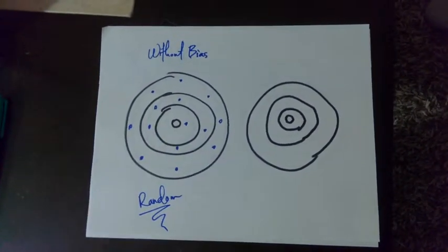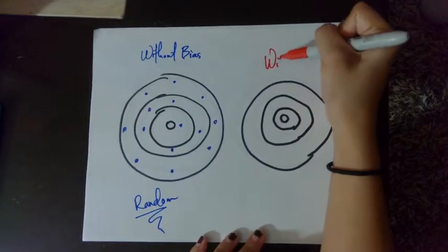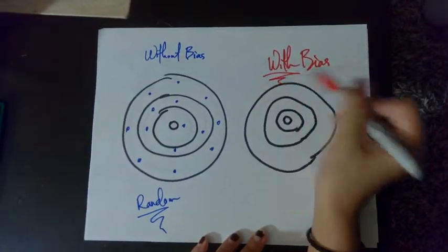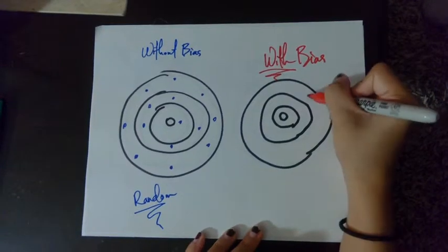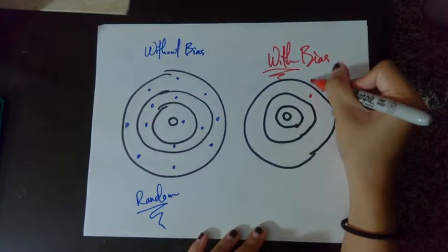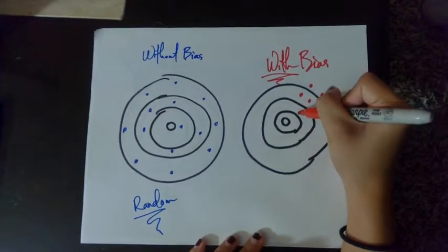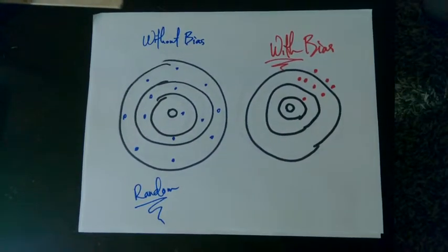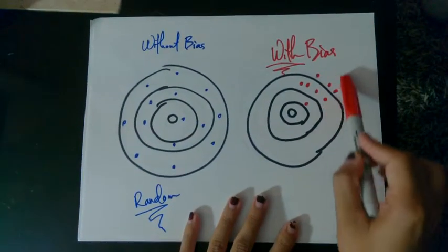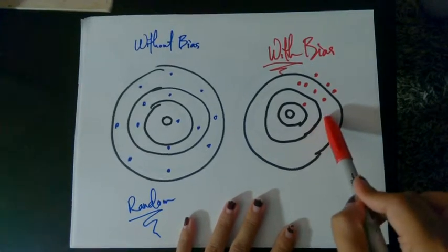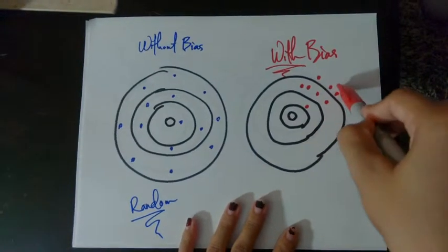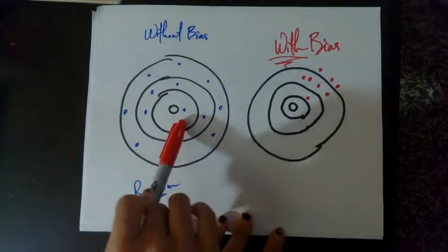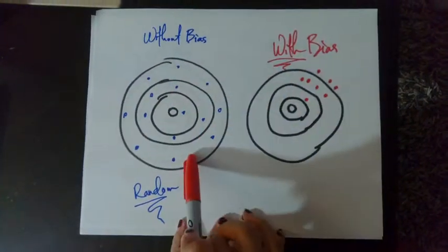With bias, on this side, it would be strongly directed on one side of the graph. Notice how they're strongly concentrated in the top right corner, versus the graph without bias where they're spread all over.